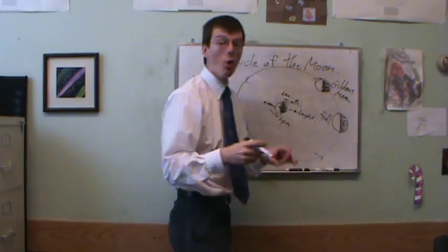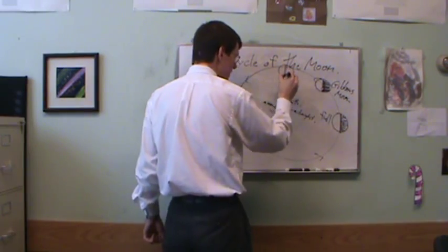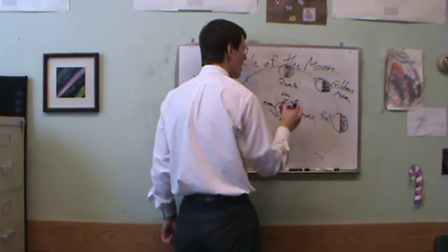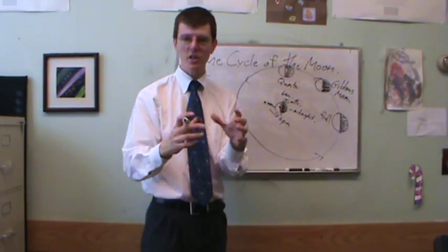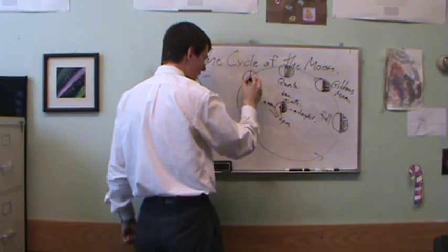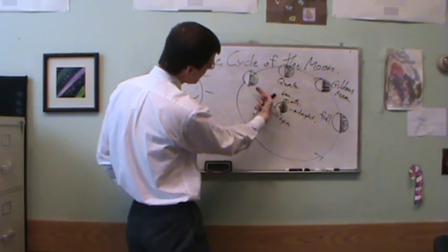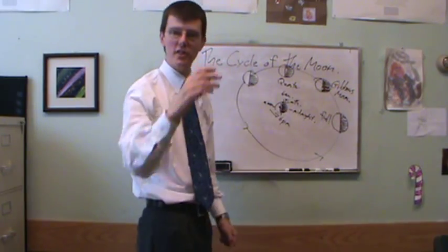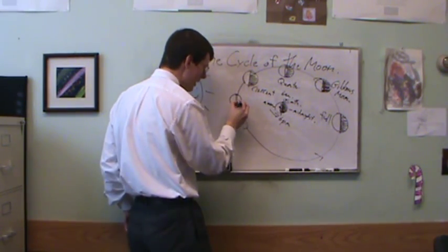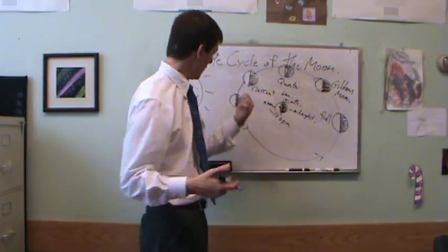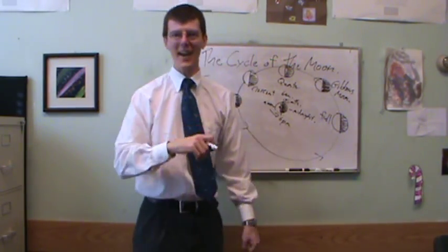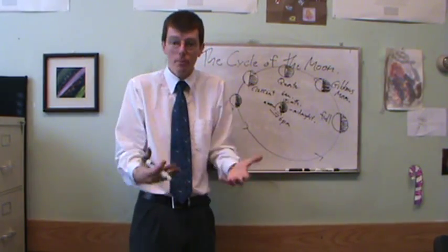Moving further around, I now see half the moon's night side and half its day side — this is a quarter moon. You might think 'half moon,' and a half moon and a quarter moon are the same thing: it's a half moon because it's half lit up, but a quarter moon because it's a quarter of the way through its cycle. Moving further, I see mostly the night side with a little bit of the lit portion — that's a crescent moon, less than half lit up. If I put the moon right there, I'm looking straight at the night side — I can't see it at all. This is a new moon. If anyone says they saw a new moon last night, they're wrong — it's impossible to see a new moon.